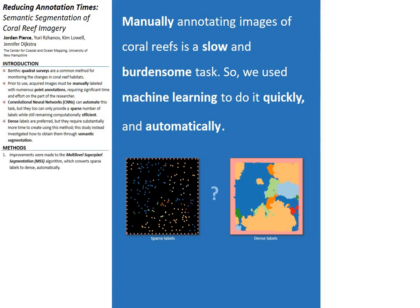Our methods started by making improvements to the multi-level superpixel segmentation algorithm, which uses multiple iterations of an over-segmentation algorithm to convert the sparse labels associated with an image into dense labels automatically. The improvements we made can be read about in our conference paper.